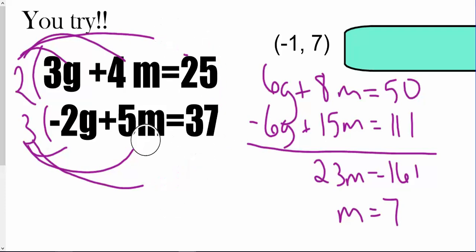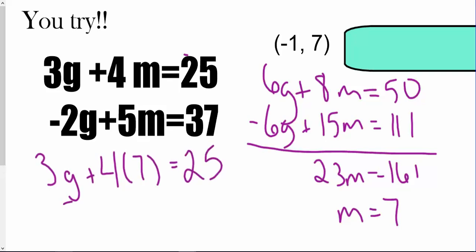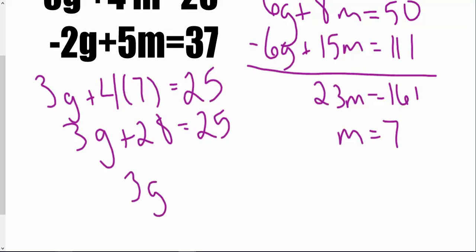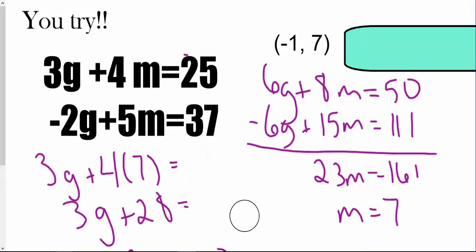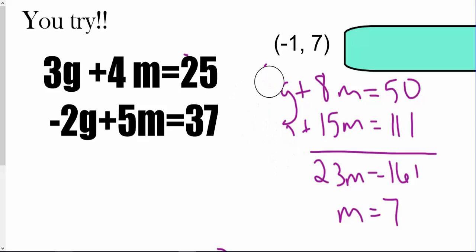Now I'll plug that in to solve for g using the top equation: 3g plus 4 times 7 equals 25. So 3g plus 28 equals 25. Subtracting 28 from both sides gives 3g equals negative 3, and dividing by 3 gives g equals negative 1. Notice that even though I'm using g and m, I'm treating them just like x and y.